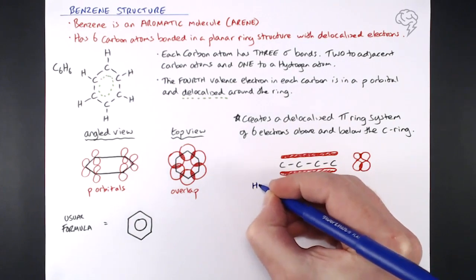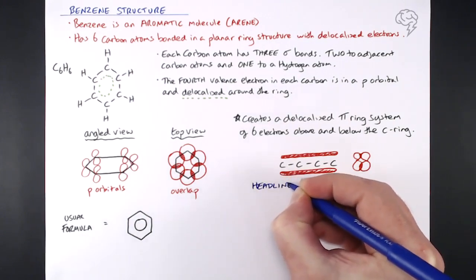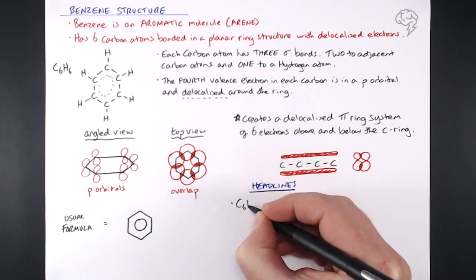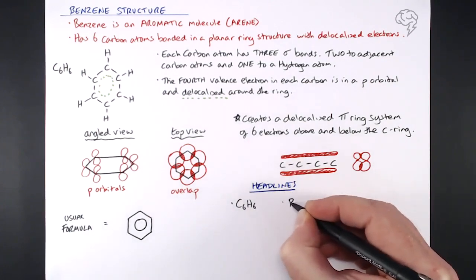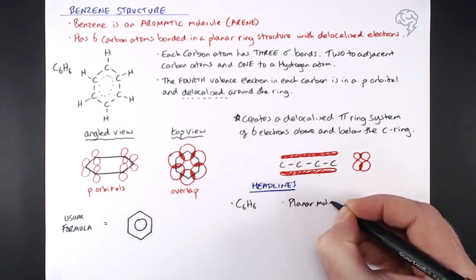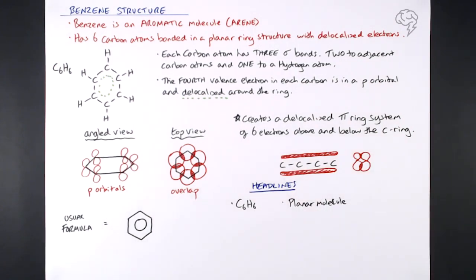So what are the headlines in terms of benzene structure? Well, the first thing, molecular formula, C6H6, do not forget that. It's also a planar molecule. So it's not tetrahedral, like you get wiggly alkanes, because of the tetrahedral shape of the bonding. It's not like that. It is actually planar.